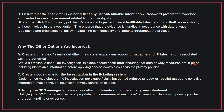Why the other options are incorrect? A: Create a timeline of events detailing the date stamps, user account hostname, and IP information associated with the activities. While a timeline is useful for investigation, this step should occur after ensuring that data privacy measures are in place. C: Create a codename for the investigation in the ticketing system. Codenames may obscure the investigation topic superficially but do not enforce privacy or restrict access to sensitive information, making this an insufficient privacy control on its own. D: Notify the SOC manager for awareness after confirmation that the activity was intentional. Notifying the SOC manager may be appropriate, but awareness alone doesn't ensure compliance with privacy policies or proper handling of evidence. Therefore, the correct answer is B.